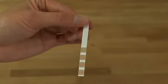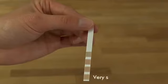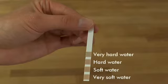Observe the number of squares that change color. One square equals very soft water, two squares equals soft water, three squares equals hard water, four squares equals very hard water.